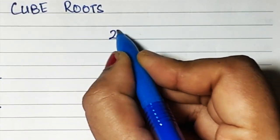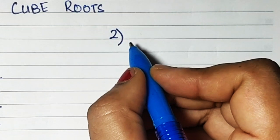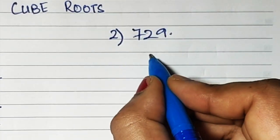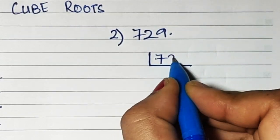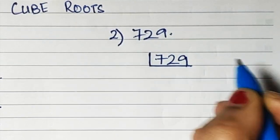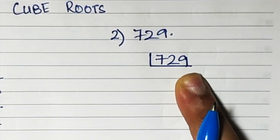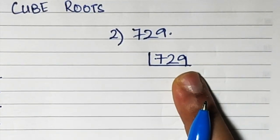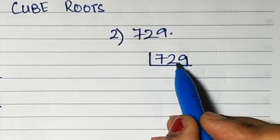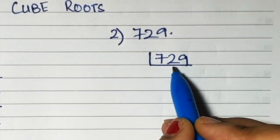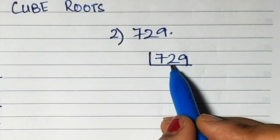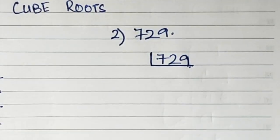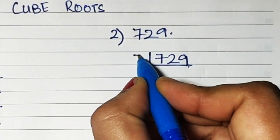Now let's do another sum: 729. Let's find out the factors of 729. Since it's 9 at the end, it's not divisible by 2. So let's see if it's divisible by 3. You have 7 + 2 + 9 = 18. Yes, it's divisible by 3 because 18 is divisible by 3, so let's take 3.